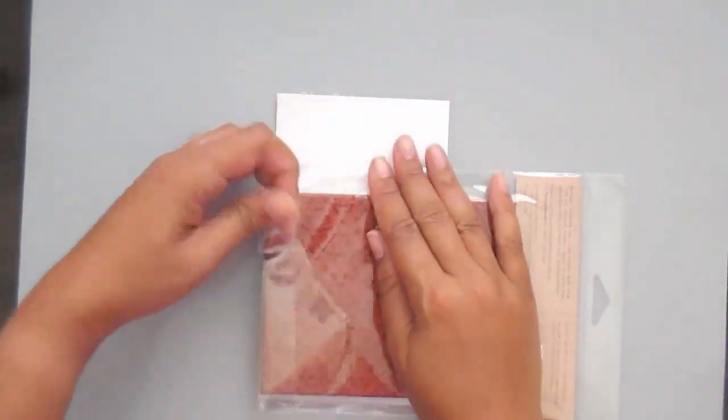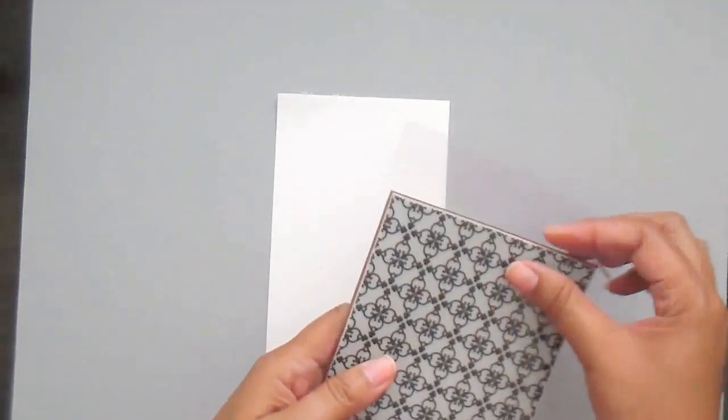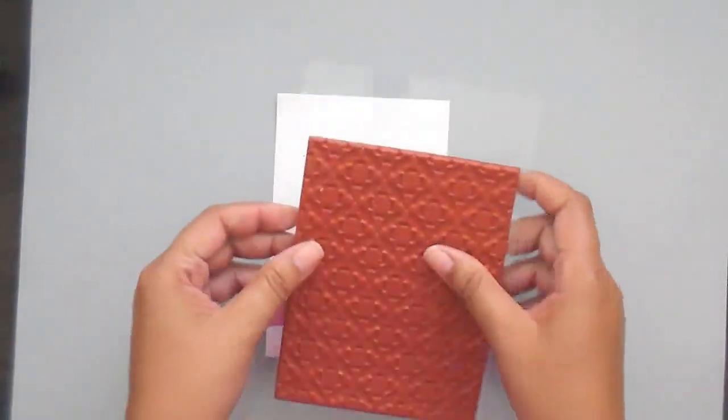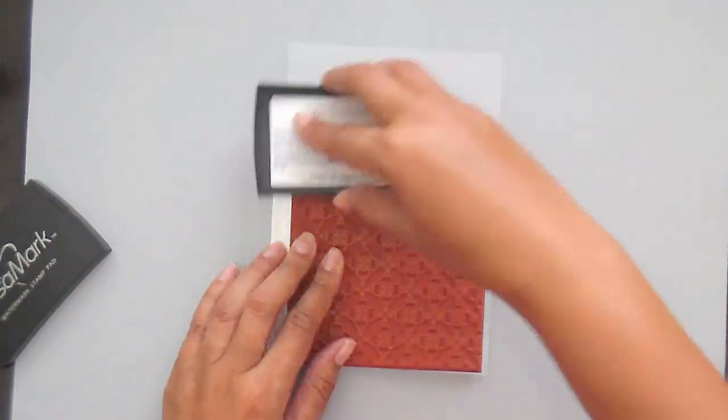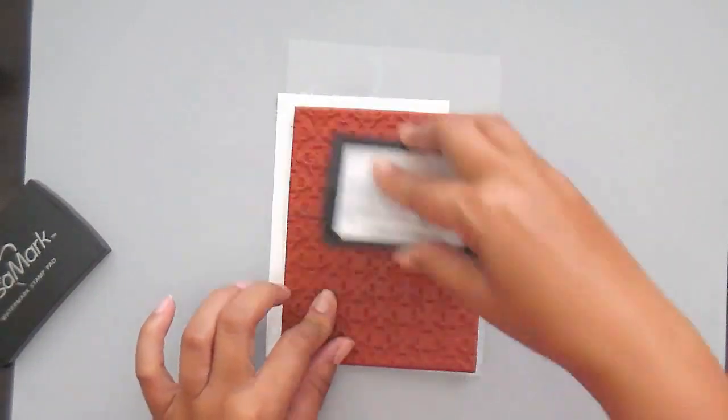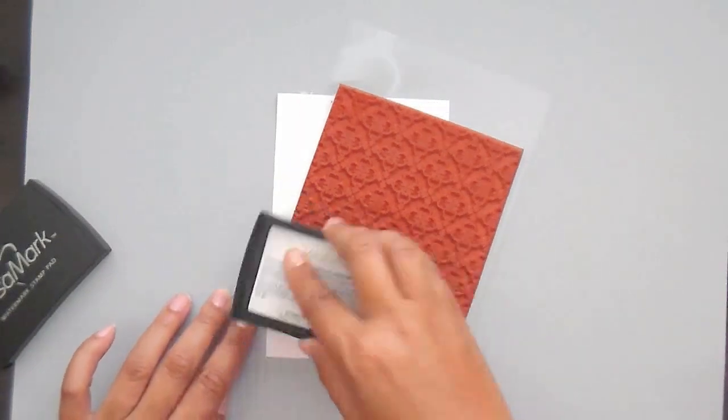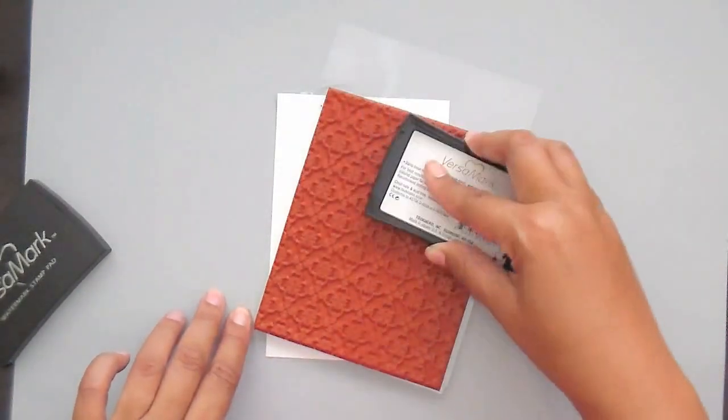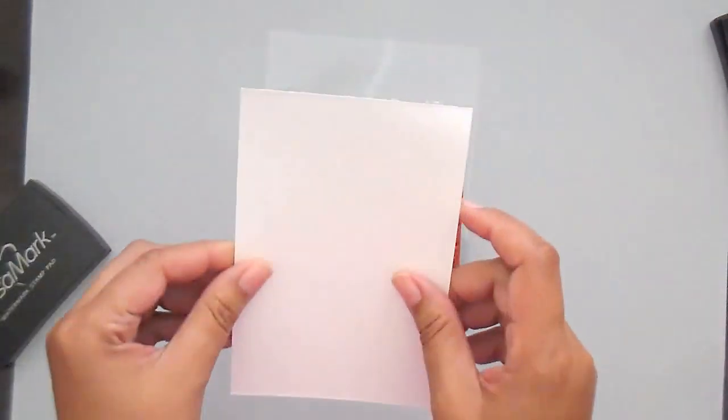So I'm going to grab my background stamp. This is a background stamp by Hero Arts and it comes with a little plastic cover on the top. I'm going to grab my Versamark. Now again, I make a lot of cards for female friends of mine or kid cards, you know, a lot of them are more girly, so I needed a nice masculine card for one of my best friends.